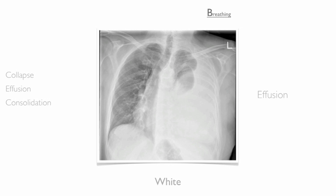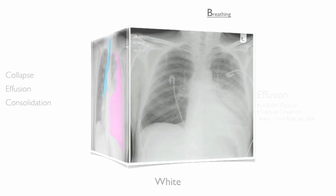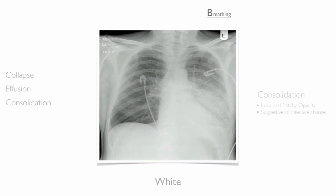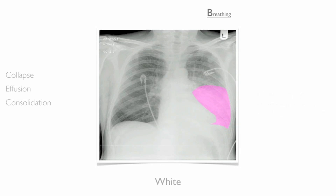Effusion presents with uniform opacity and tracheal deviation pushed away from the affected side. Consolidation presents as localized patchy opacity with air bronchograms.